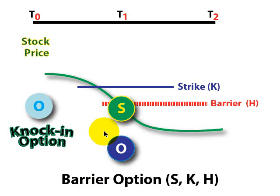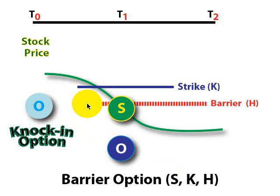So we have both a knock-out option and a knock-in option. Each variation has an up-and-in, an up-and-out, a down-and-in, or a down-and-out sub-variation. That's a brief illustration of the barrier option. David Harper of Bionic Turtle — thanks for your time.